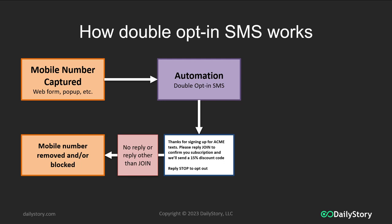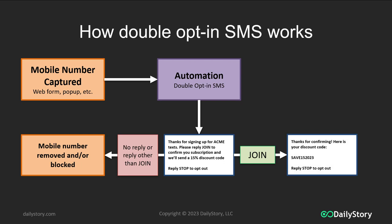What's going to happen then is the recipient of that message — if they signed up as intended — is going to reply back with "join" and they're going to get the expected text message that they wanted to sign up for. However, if they reply with something other than "join", or if they never reply at all, it will mark that number as opted out because they are not opted in.